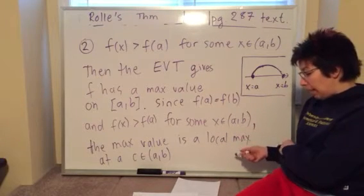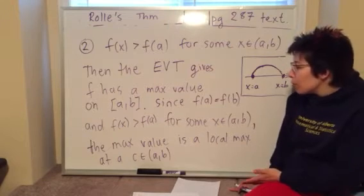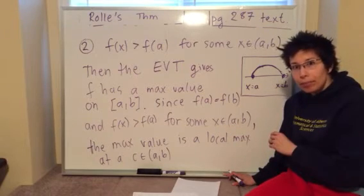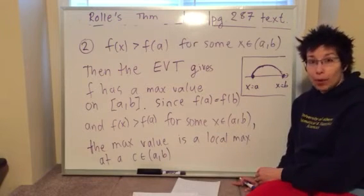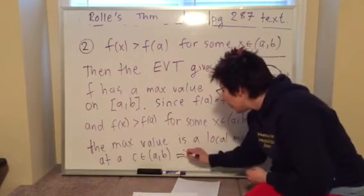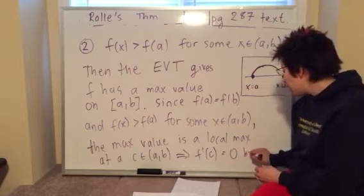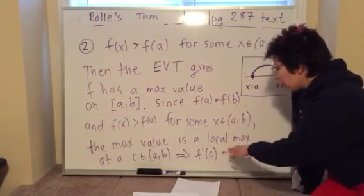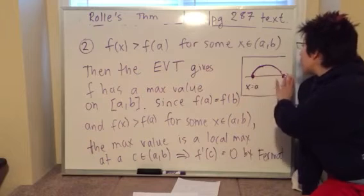We know there's a local max, but we want to show f'(c) = 0. How do we jump from a local max to f'(c) = 0? We appeal to Fermat's Theorem. Since there is a local maximum at c in the open interval and f is differentiable there, Fermat's Theorem gives us that f'(c) = 0. We used both the Extreme Value Theorem and Fermat's Theorem to complete case two.